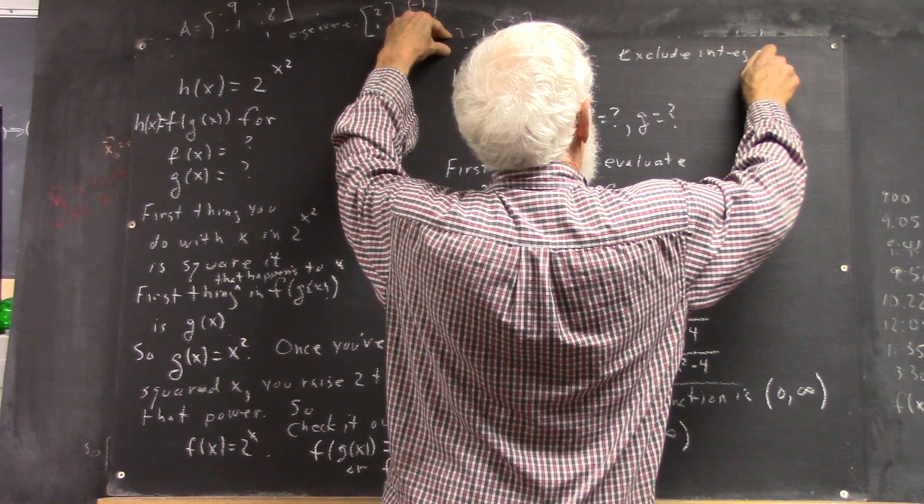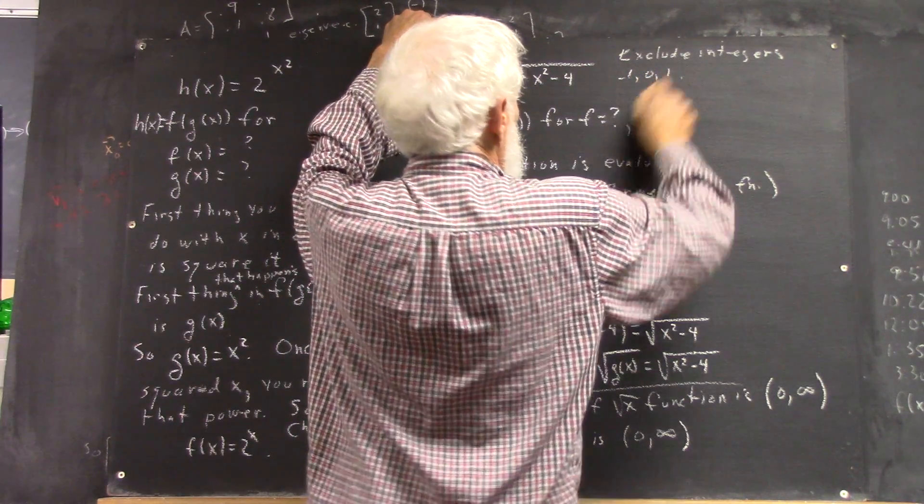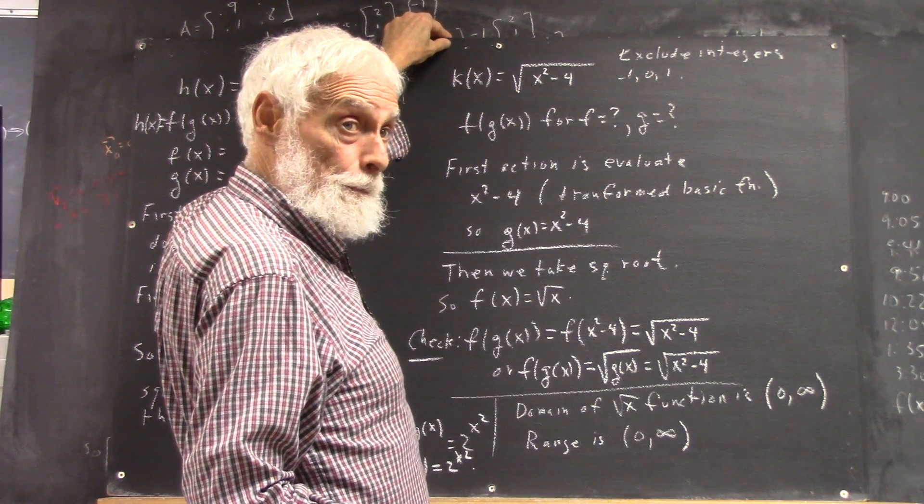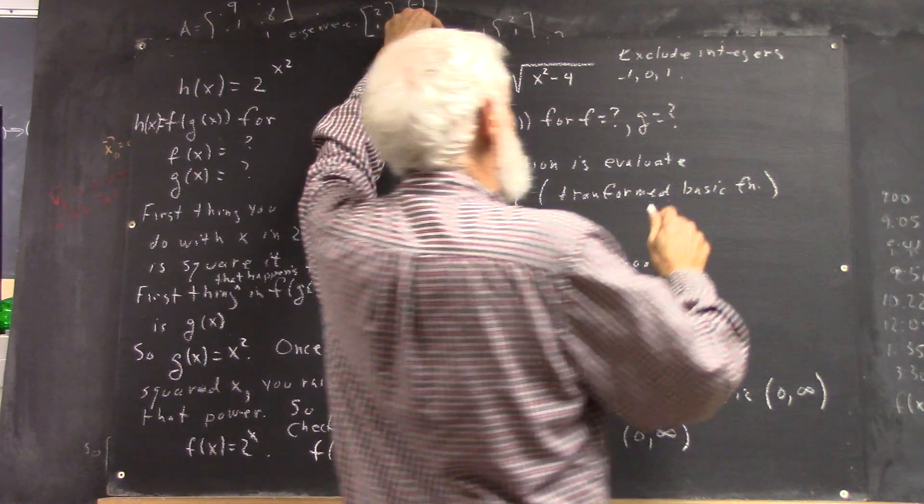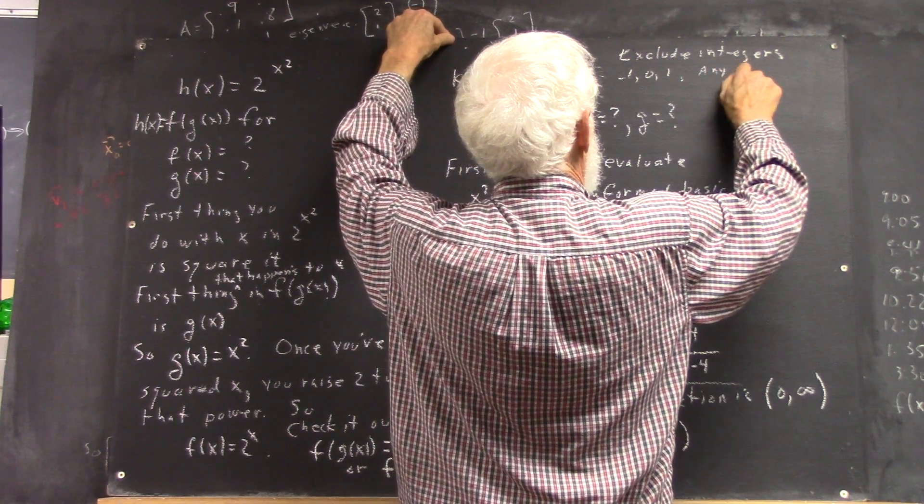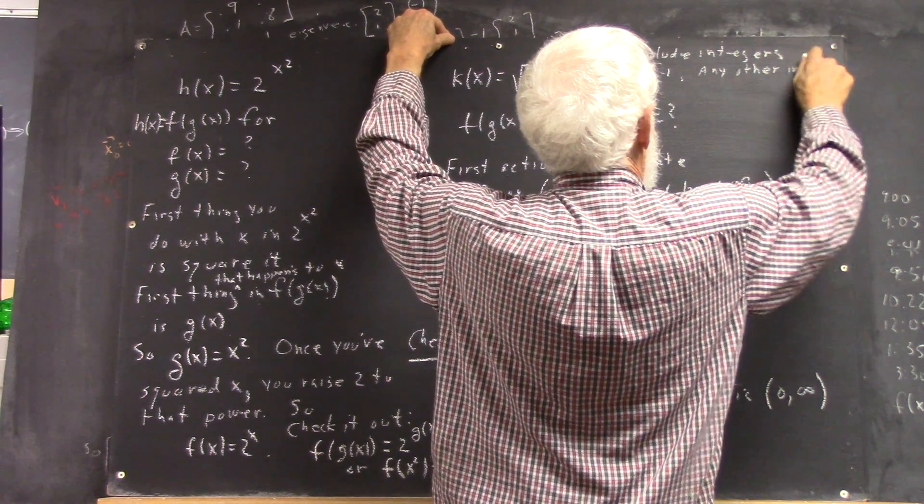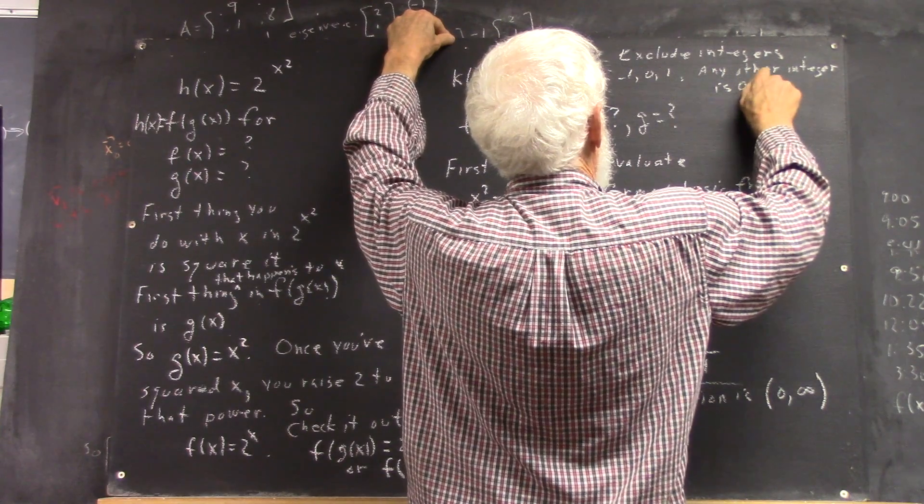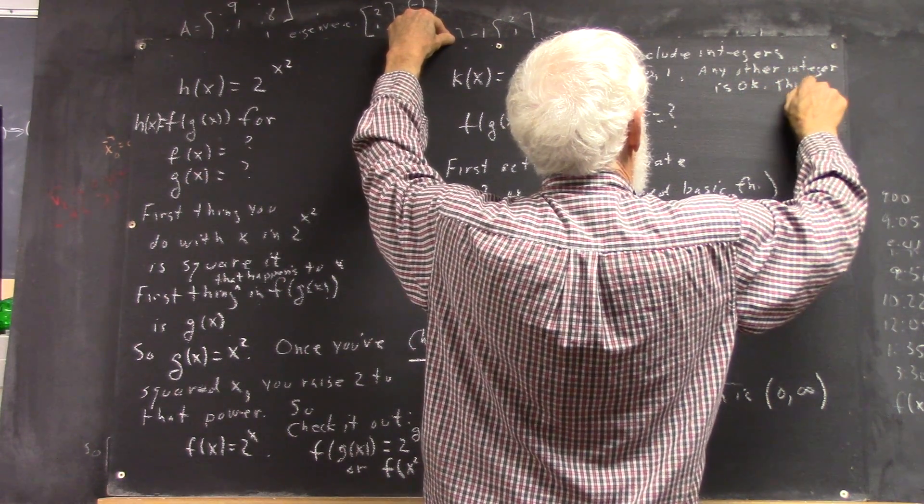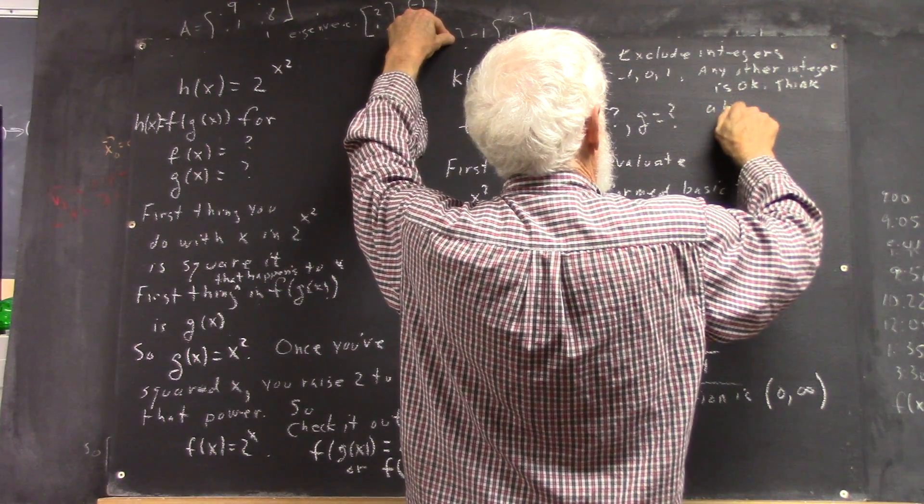So you've got to exclude the integers negative 1, 0, and 1. Any other integer is okay.